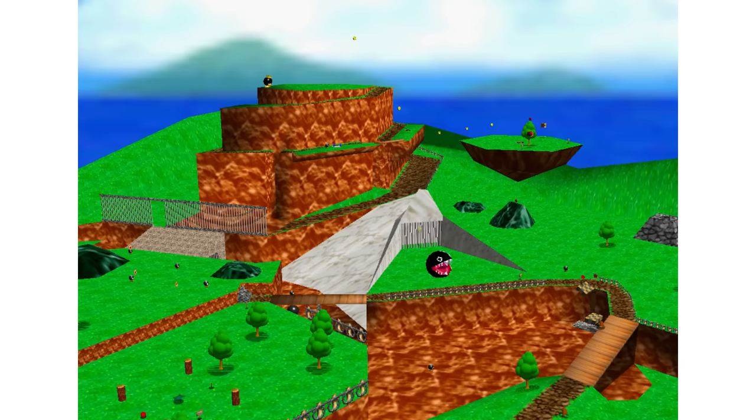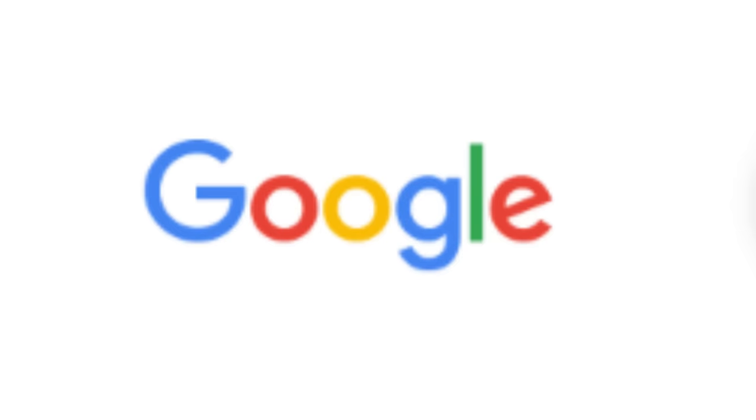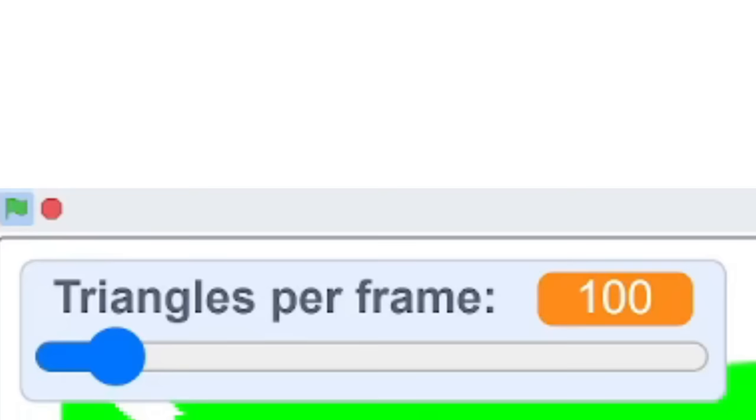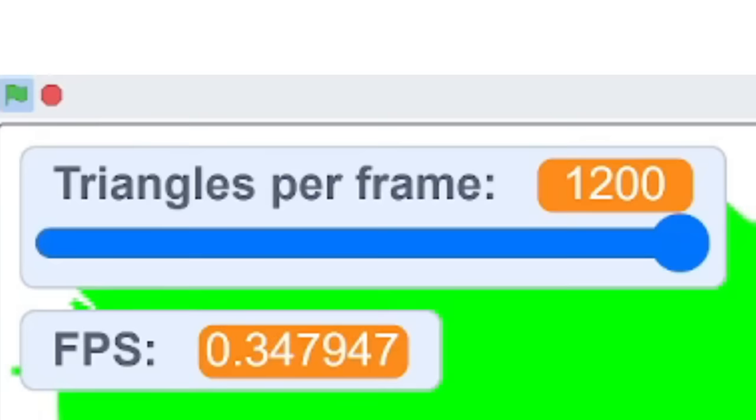But Mario 64 doesn't use 100 triangles. According to Google, the Bob-omb Battlefield map has over 1200 triangles. So I put my project to 1200 triangles per frame, and it ran at 0.2 frames per second. One frame every five seconds.